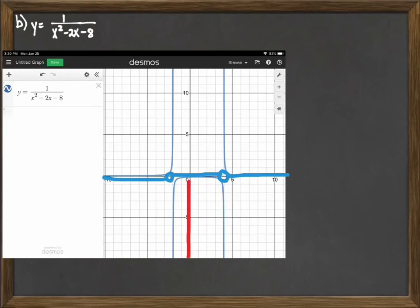So the domain here, we're losing those two values at negative 2 and at 4. Range wise, it takes on everything up to 0, but not including 0. If you were to zoom in on this graph, the graph approaches 0 but never actually reaches it, and it continues upward.